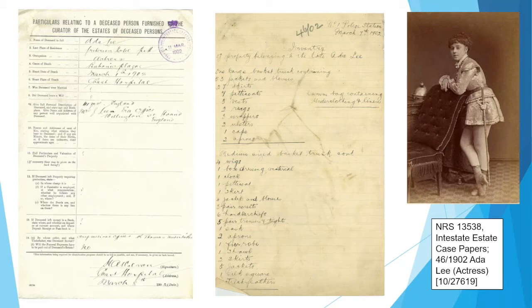We have several pages listing Ada's belongings — her large basket trunk with 53 jackets, 27 skirts, seven petticoats, her cape, aprons, ulsters, and wrappers; a medium-sized trunk with four wigs, a clock, petticoat, more skirts, jackets, handkerchiefs, tights and so on — including ostrich feathers, as you do. And there was also a wonderful photo of Ada on the right-hand side of the screen.